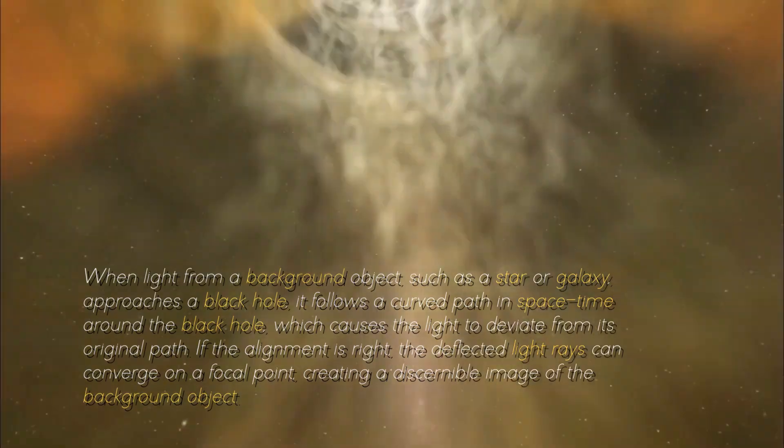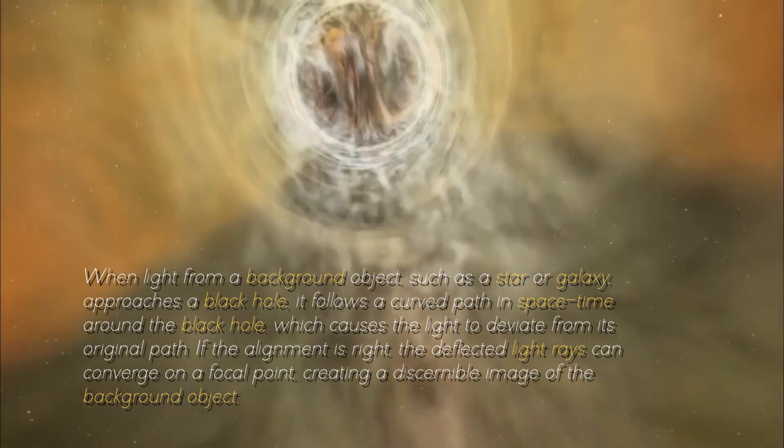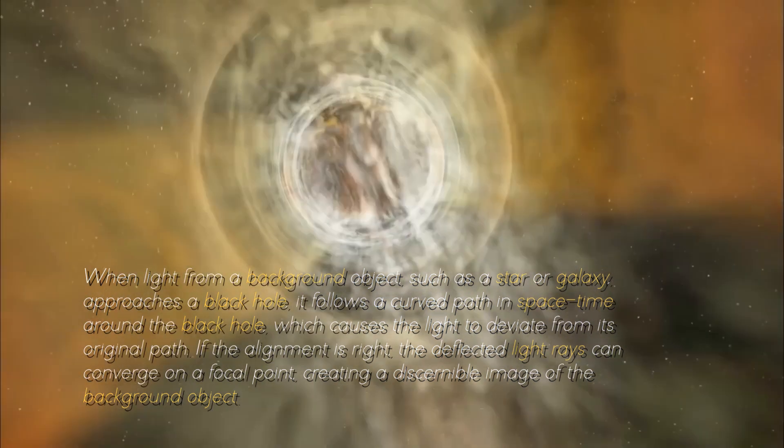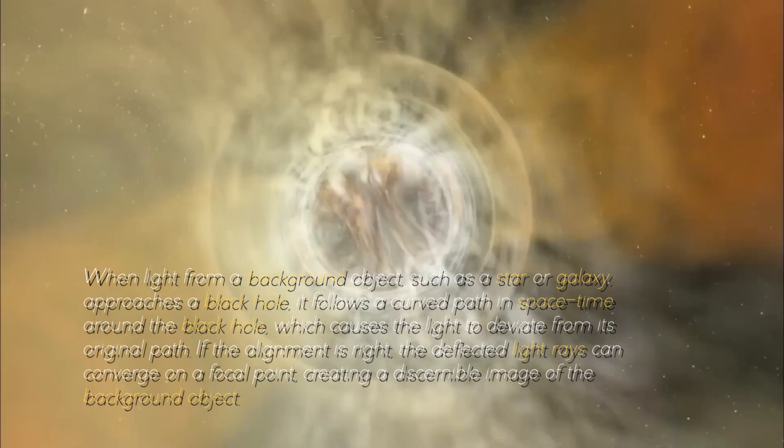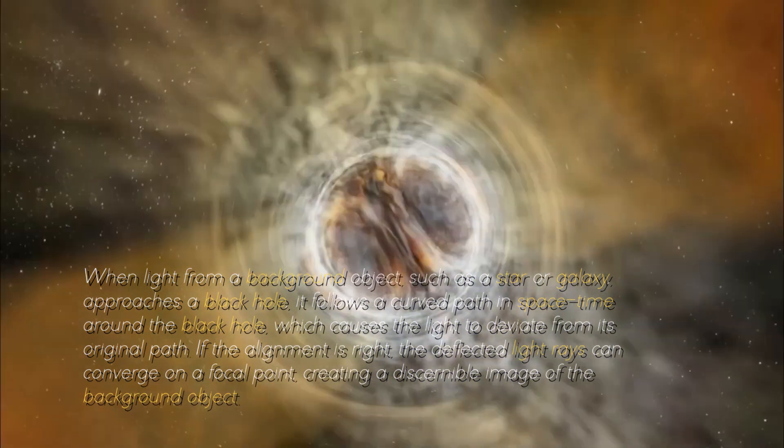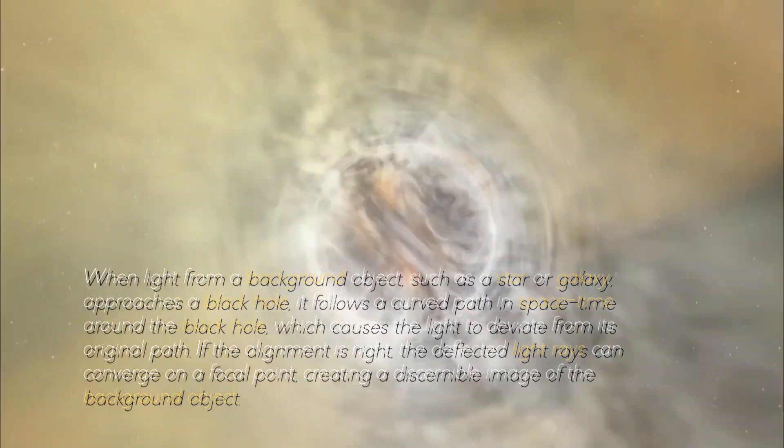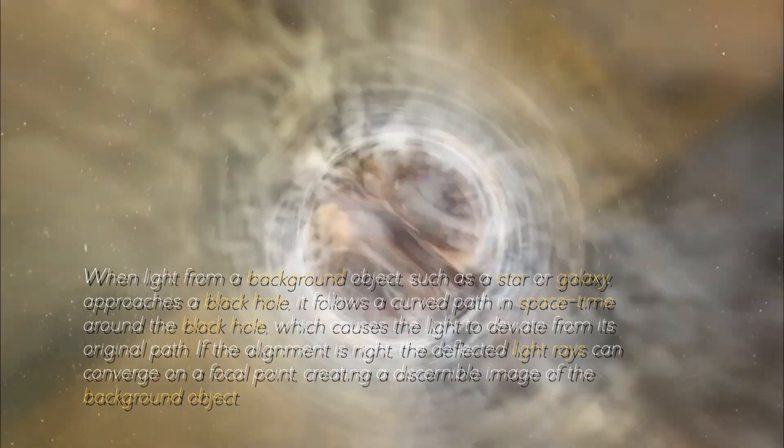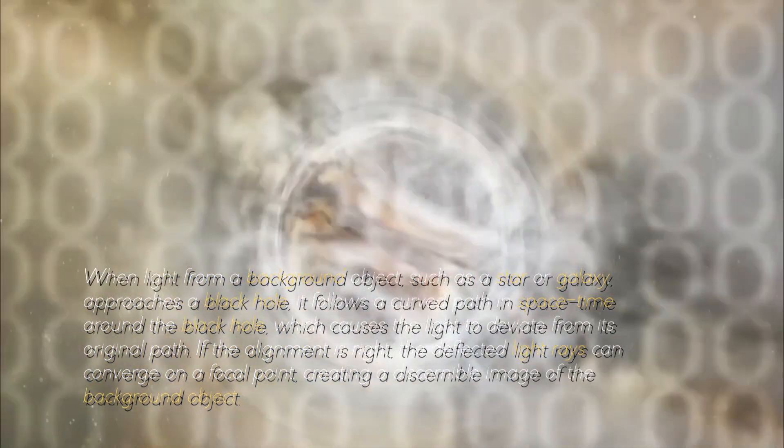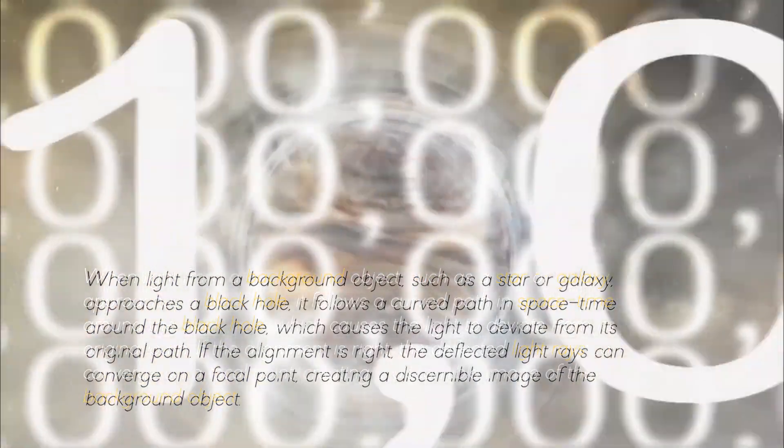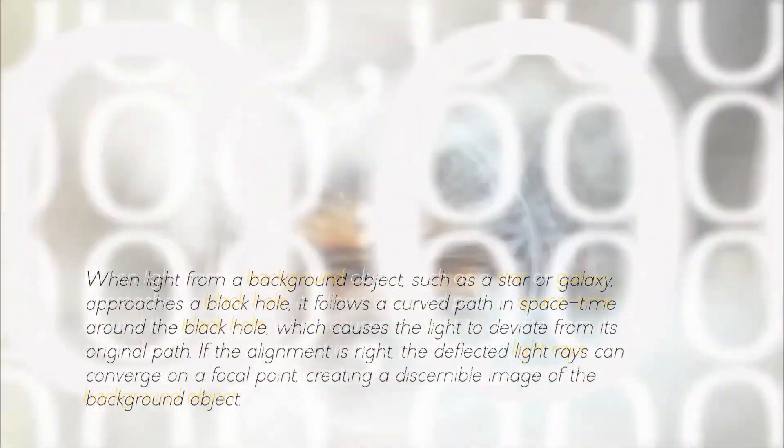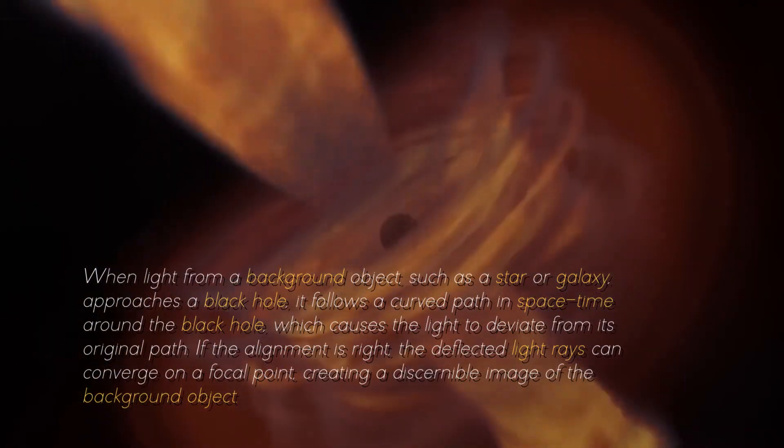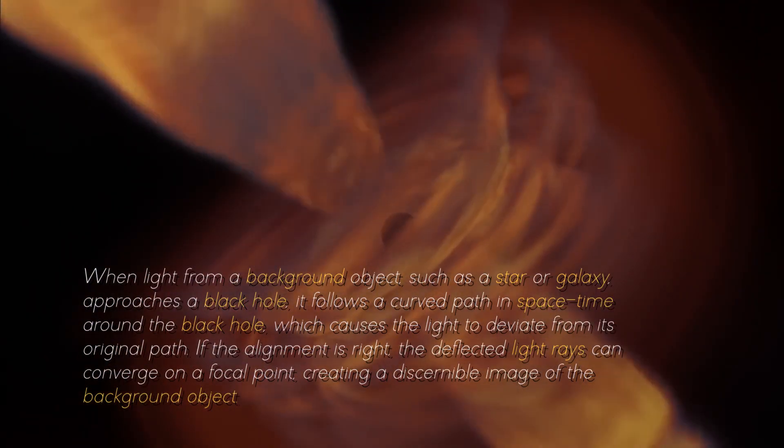When light from a background object, such as a star or a galaxy, approaches a black hole, it follows a curved path in spacetime around the black hole, which causes the light to deviate from its original path. If the alignment is right, the deflected light rays can converge on a focal point, creating a discernible image of the background object.